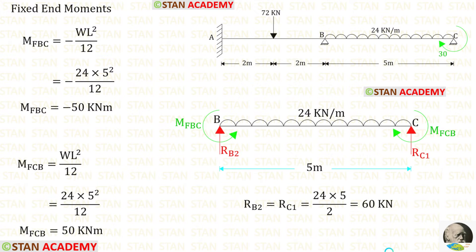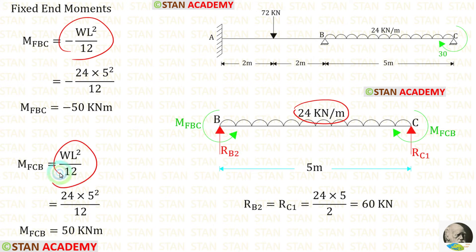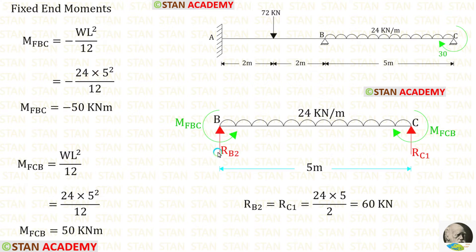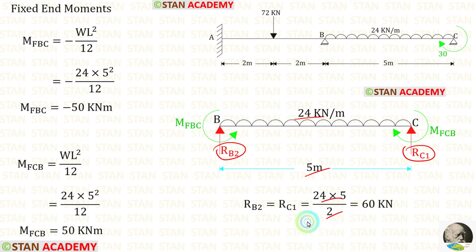Now let us find the fixed end moments in span BC. In span BC, we have a uniformly distributed load of 24 kilonewton per meter acting over the full span. The formulas are minus WL² over 12 and WL² over 12, where W is 24 and L is 5. After calculation, we get M_BC and M_CB. For reactions RB2 and RC1, we multiply the UDL 24 by the distance 5 and divide by 2, giving us 60 kilonewton each.